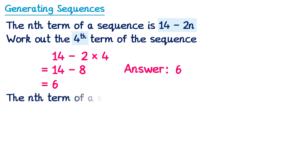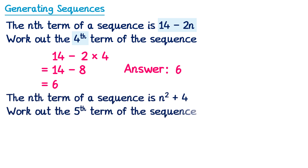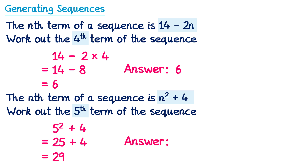In this question, the nth term is n squared plus 4, and we're going to work out the fifth term of the sequence. So we've got n squared plus 4 and we need to substitute in 5 for the fifth term. So instead of n squared, it's going to be 5 squared, and then plus 4. 5 squared is 25, so 25 plus 4, which is 29. So the answer is 29.